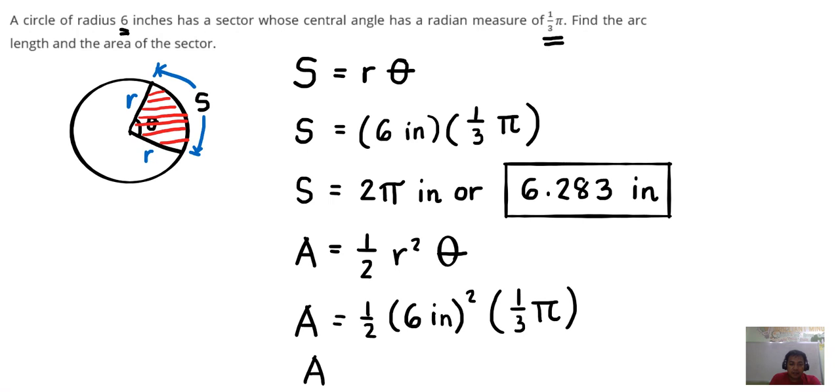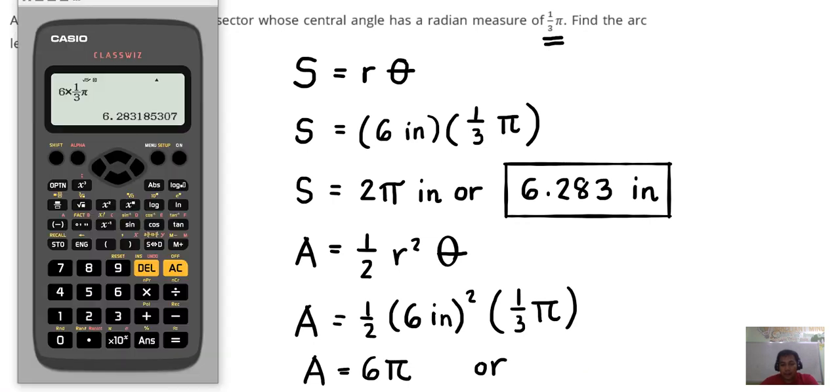So this is equal to one-half, 36 divided by six is six, so this is six pi, or six pi equals 18.85.